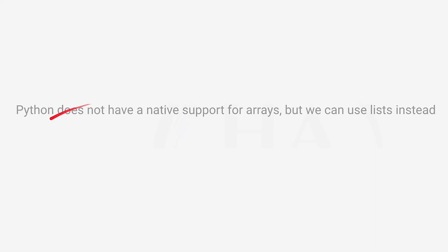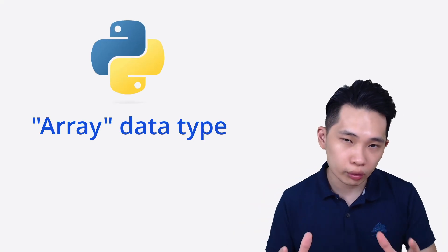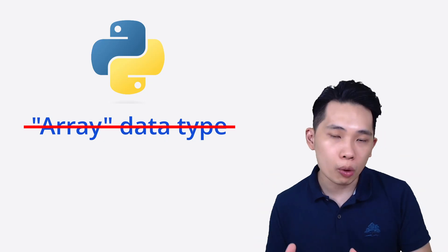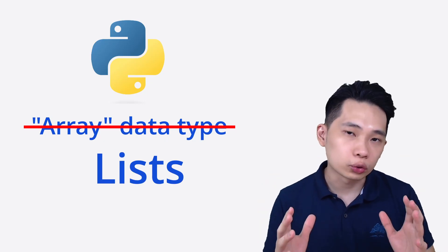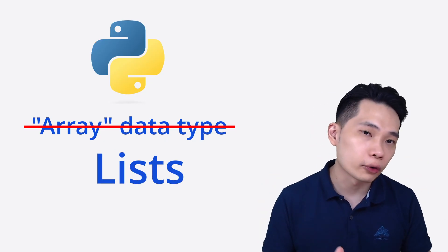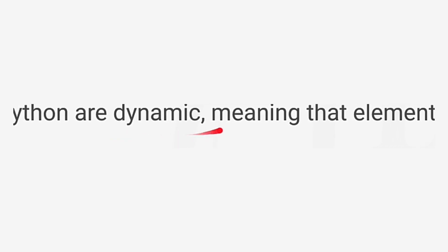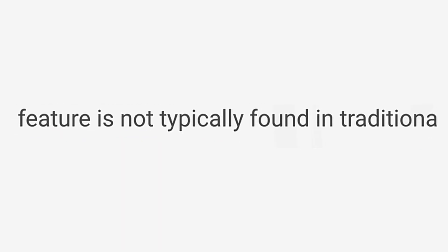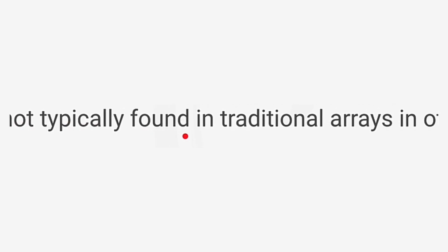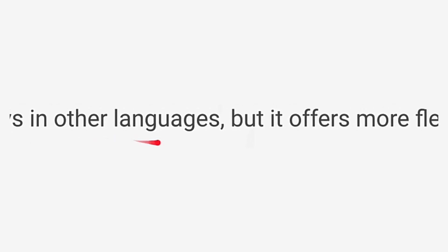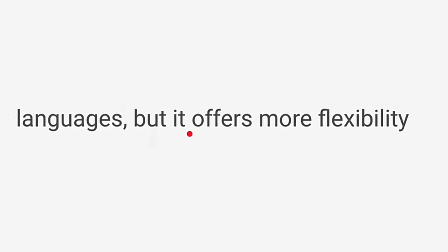Python does not have native support for arrays, but we can use lists instead. It means that inside Python itself, we do not have this array data type. So normally, we will be using lists to replace arrays. Bear in mind that lists in Python are dynamic, meaning that elements can be added or removed from them. This feature is not typically found in traditional arrays in other languages, but it offers more flexibility.